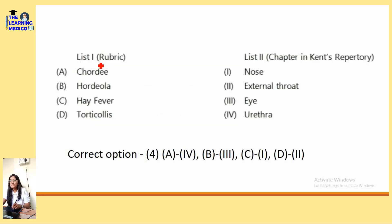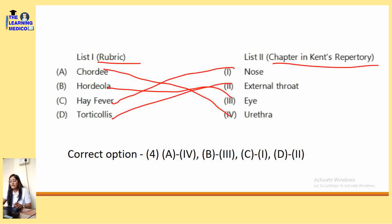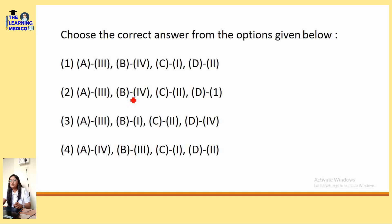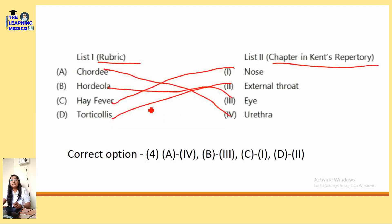Match list of rubric and chapter in Kent's Repertory: Cordy is under Urethra, Hordeola is under Eye, Hay Fever is under Nose, and Torticollis is under External Throat. For solving such questions, knowing even one correct answer like hay fever helps you eliminate options.